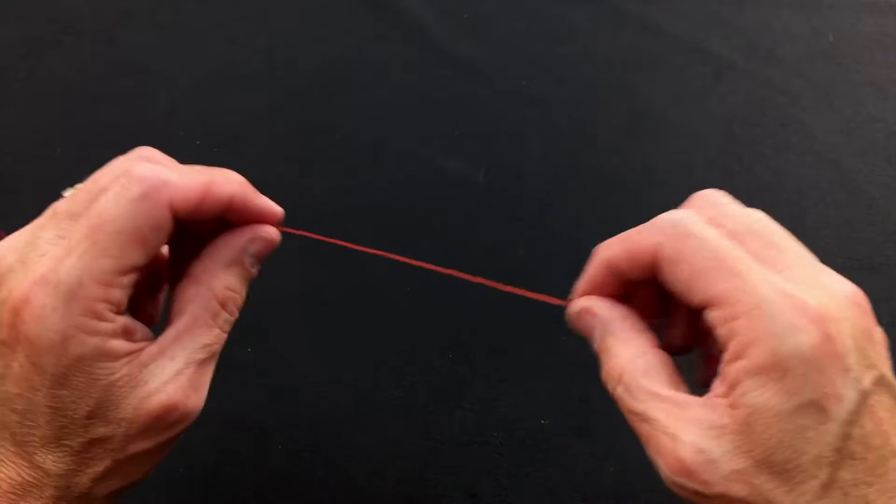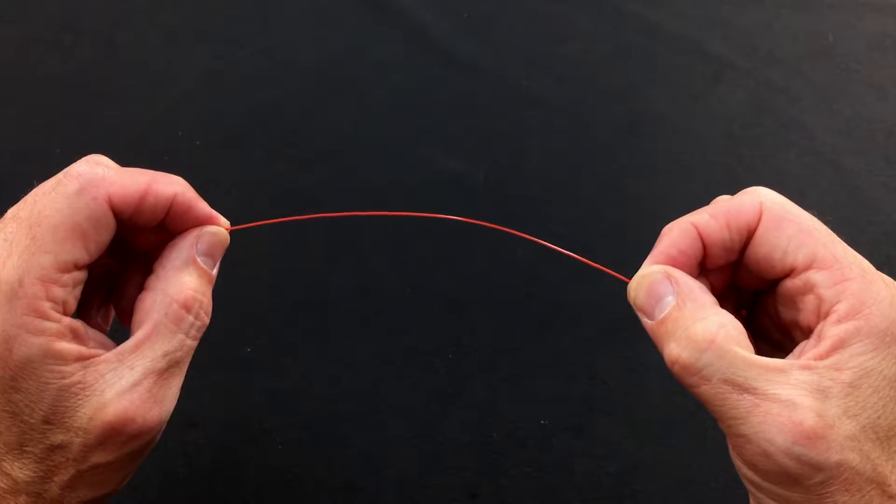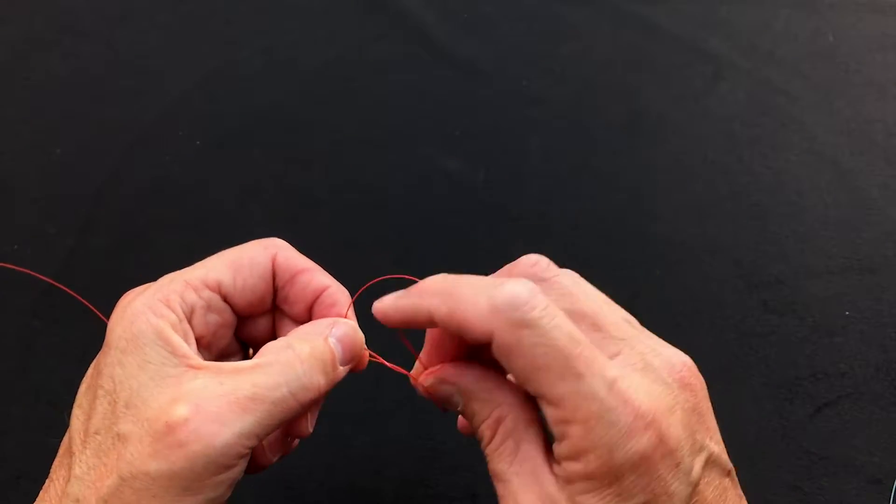The knot is very simple in terms of how you do it. The first thing you do is you're going to take your thick material, whether it's the shock tippet or your wire, and you're just going to tie an overhand knot, and you're going to go through twice. One, two.